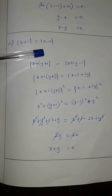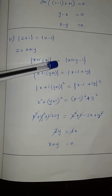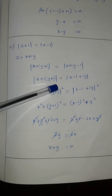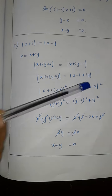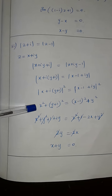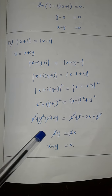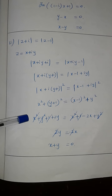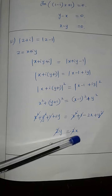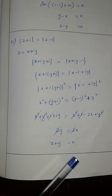Next subdivision: modulus of z plus i is equal to modulus of z minus 1. Z value is x plus iy, so we get |x + i(y+1)| = |(x−1) + iy|. Taking squares on both sides: real part squared plus imaginary part squared. Expanding using (a+b)² and (a−b)² formulas: x² + y² + 2y + 1 = x² + y² − 2x + 1. Cancelling common terms, 2y = −2x, giving x plus y is equal to 0.